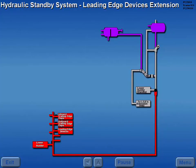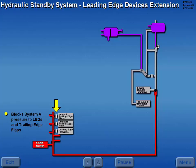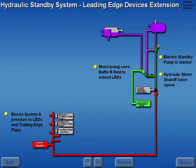When the standby hydraulic system is initiated for LED extension, System A pressure is blocked to the LEDs and trailing edge flaps and the electric standby pump is started. When alternate flap deployment is activated, the hydraulic motor shutoff valve opens and hydraulic pressure from the electric standby pump drives the hydraulic motor pump. The motor pump uses fluid from the baffle B reservoir to extend the LEDs. Standby pressure is available to the lower rudder shuttle valve. However, the lower rudder is still powered by System A if available.